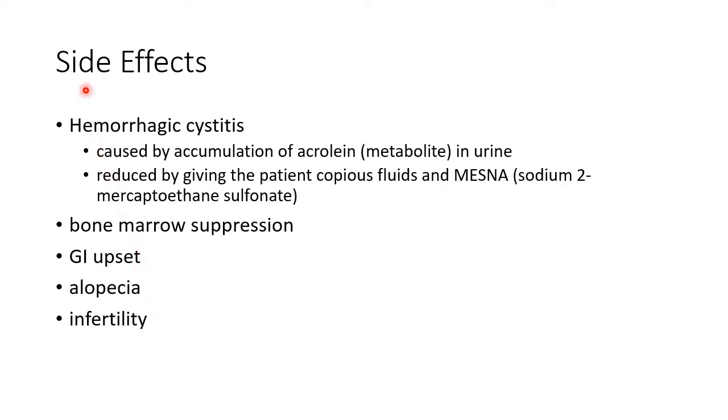Now let us see about the side effects of cyclophosphamide. Hemorrhagic cystitis is a major side effect of cyclophosphamide. It is caused by accumulation of acrolein, which is a metabolite in urine. Hemorrhagic cystitis can be reduced by giving the patient copious fluids and MESNA. MESNA is sodium 2-mercaptoethane sulfonate.